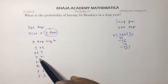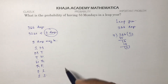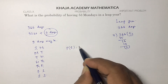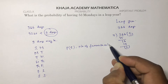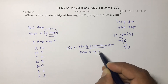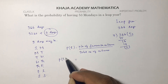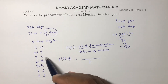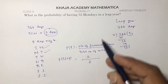The two extra days may be Sunday-Monday, Monday-Tuesday, Tuesday-Wednesday, Wednesday-Thursday, Thursday-Friday, Friday-Saturday, or Saturday-Sunday. The probability of an event is favorable outcomes divided by total outcomes. Monday appears in two of these seven outcomes — Sunday-Monday and Monday-Tuesday — so the probability of getting 53 Mondays in a leap year is 2/7.